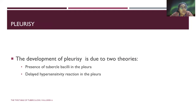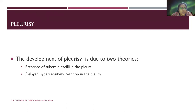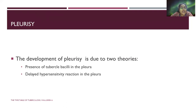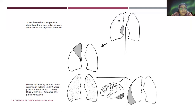Pleurisy develops from six to twelve months, and its development is attributed to two theories: one is the presence of tubercle bacilli in the pleura, or a delayed hypersensitivity reaction in the pleura due to the bacilli.